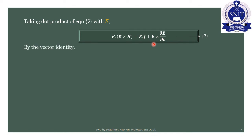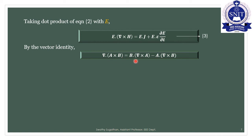We apply the vector identity: del · (A cross B) = B · (del cross A) − A · (del cross B). We will rewrite this mathematical identity.